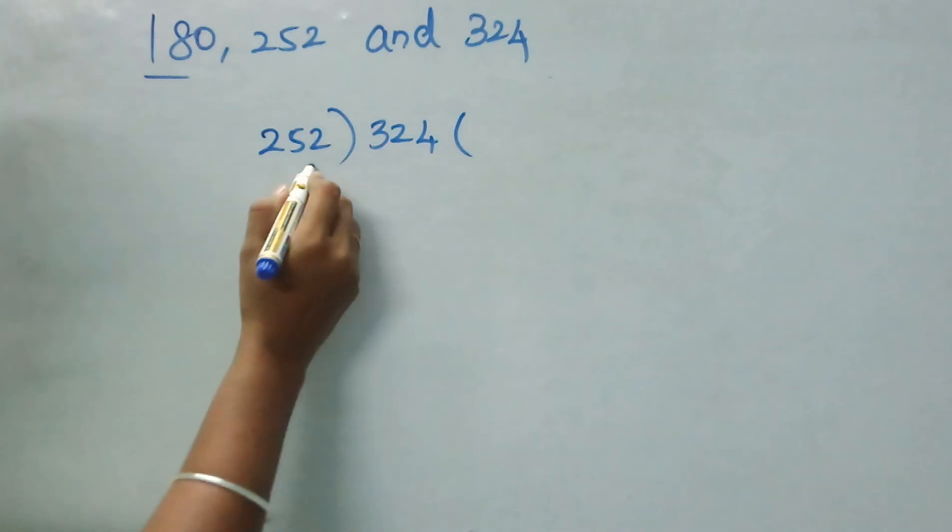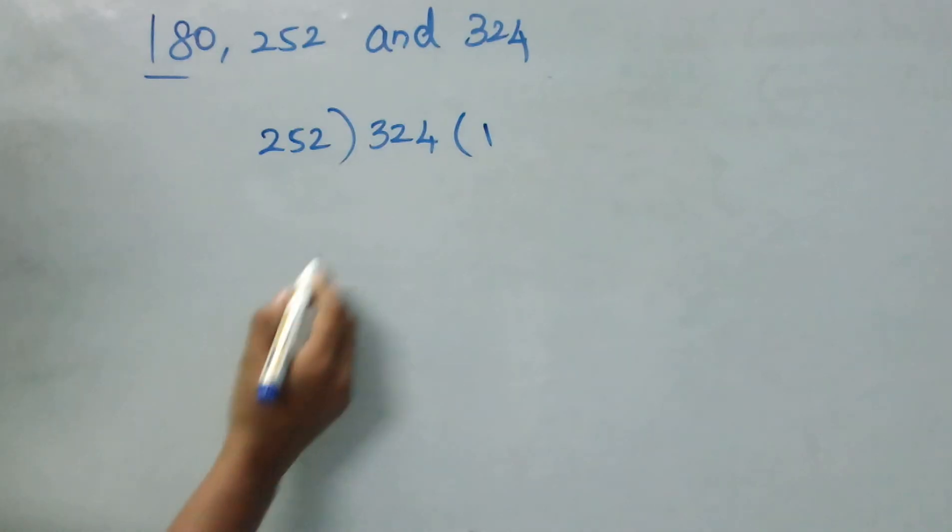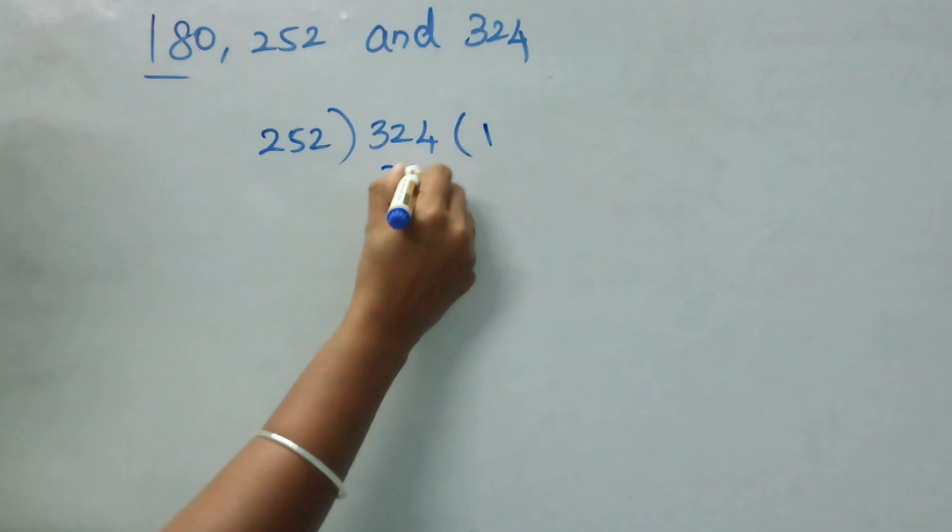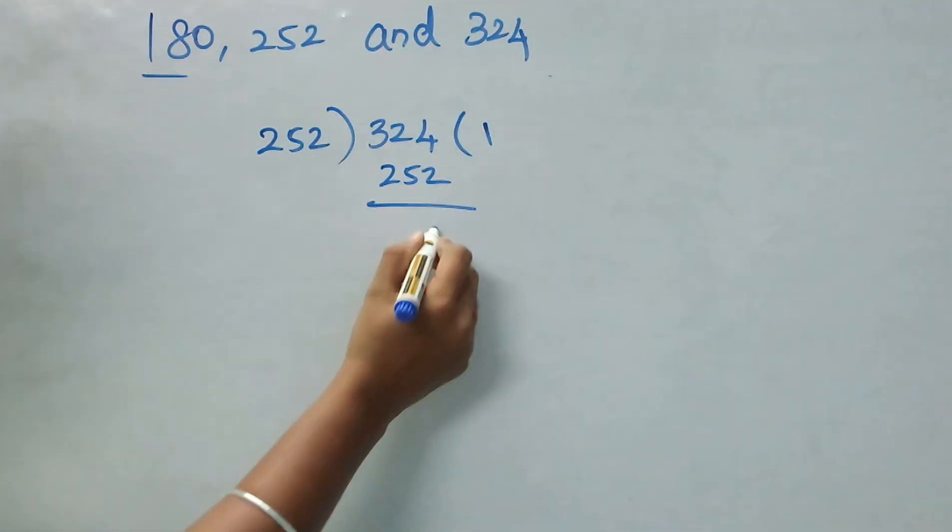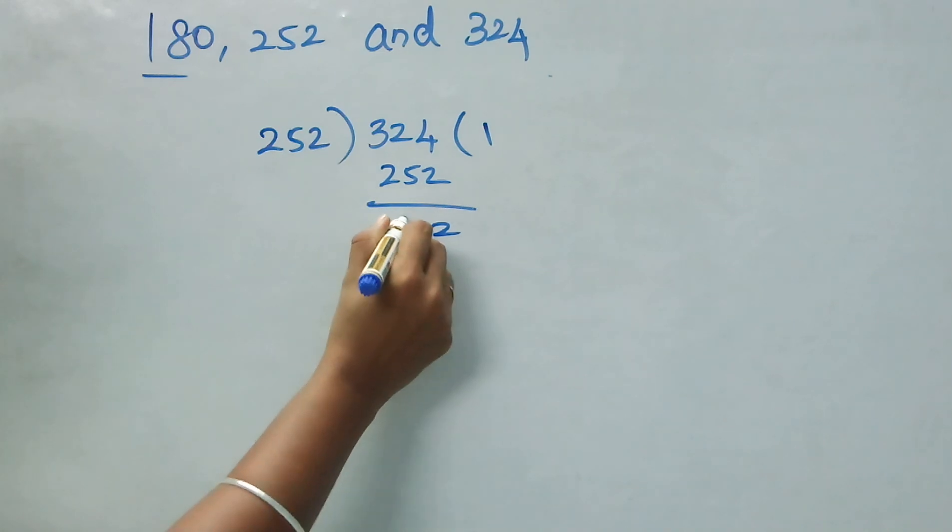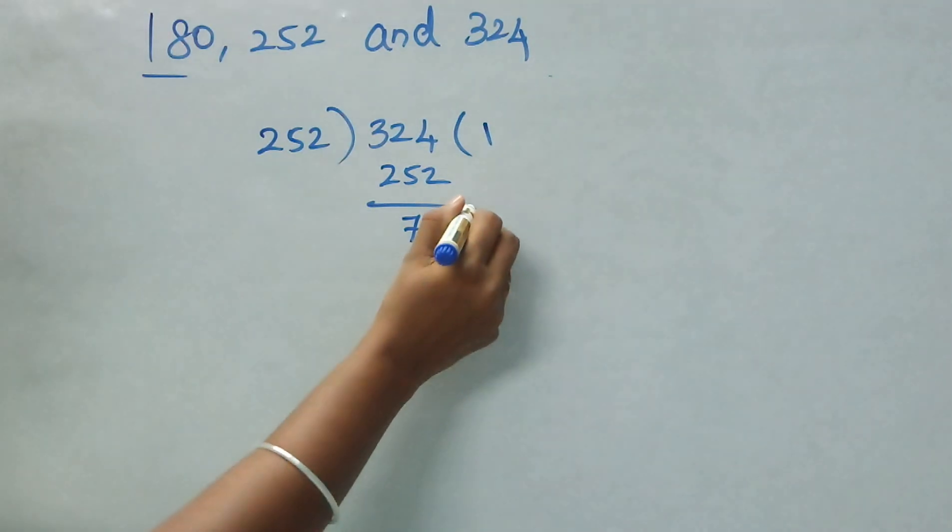This 252 is 1 time in 324. So, 24 minus 2 is 2, 12 minus 5 is 72. Now, make the 72 as divisor.